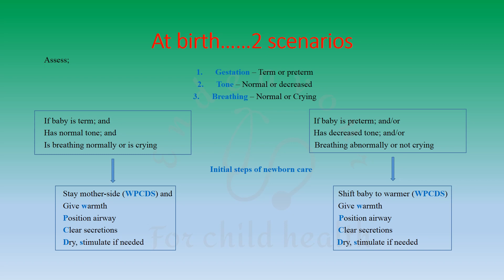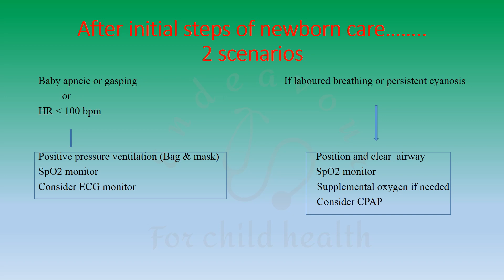However, if the baby is preterm and/or has decreased tone and/or is breathing abnormally or is not crying, then you shift the baby from the mother's side to the warmer and again provide warmth, positioning, clear the airway, dry, and stimulate as required. These five steps, easily remembered by the mnemonic WPCDS, are referred to as the initial steps of newborn care.